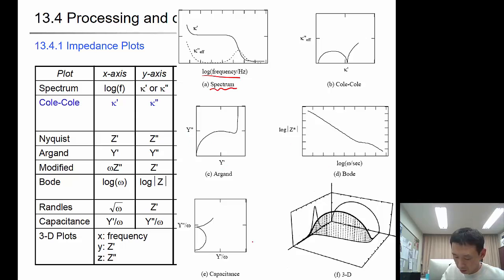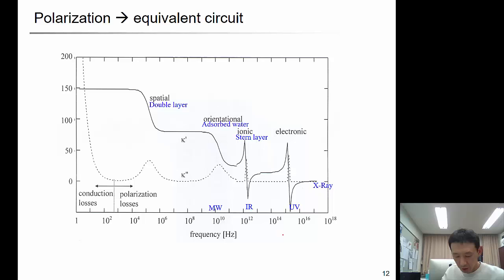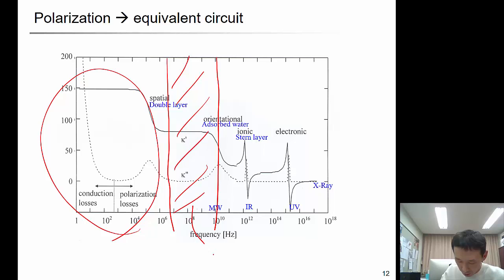So then polarization, depending on where you measure, it could be an equivalent circuit if it's less than megahertz. If it's bigger than megahertz, then it will be wave propagation. From here to somewhere here in this region. And it overlaps with the orientational polarization.